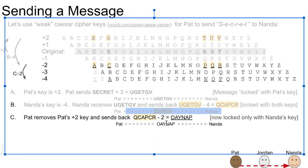So Pat takes the Q-CAP-C-R that came from Nanda right here and does the minus two, removing Pat's plus two key. And so we have here Q-CAP-C-R, so this Q. And so we're doing a minus two. Minus two, then Q to the left twice becomes O. And for convenience, I've just lined them up here. So Q becomes O, and C becomes A, and so forth. So Q-CAP-C-R minus two becomes O-I-NAP.